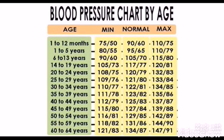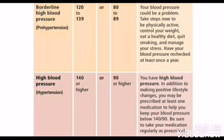To pump blood around the body, the heart contracts and then relaxes over and over again in a cycle called the cardiac cycle. The cycle begins when the two atria contract, which pushes blood into the ventricles. Then the ventricles contract, which forces the blood out of the heart.